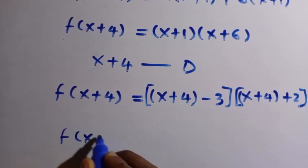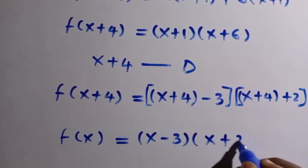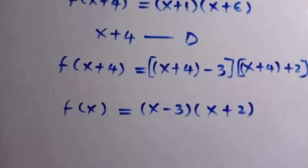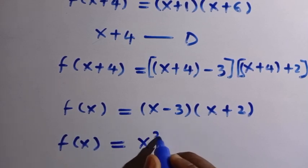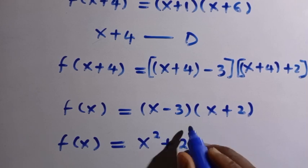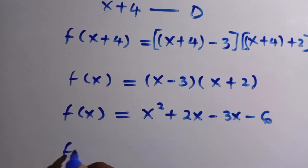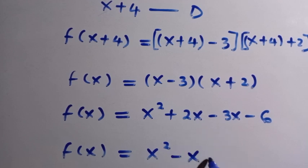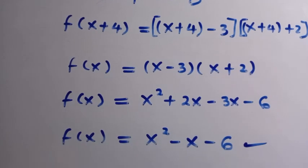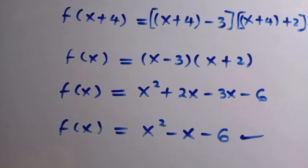By replacing x+4 with x, we have f(x) equals (x minus 3)(x plus 2). Expanding: x times x is x squared, x times 2 is 2x, minus 3 times x is minus 3x, and minus 3 times 2 is minus 6. So f(x) equals x squared minus x minus 6. That is the result from Method 1.